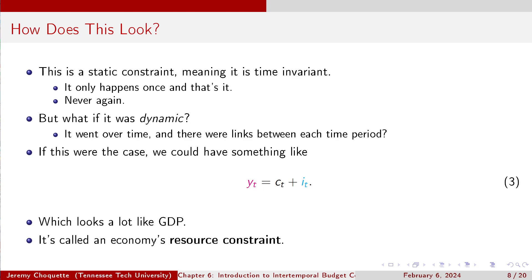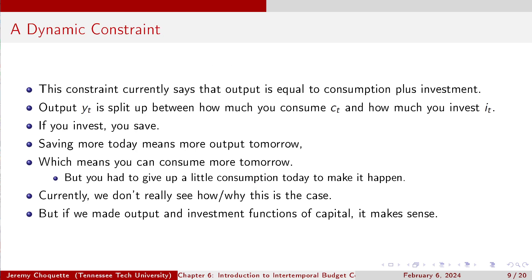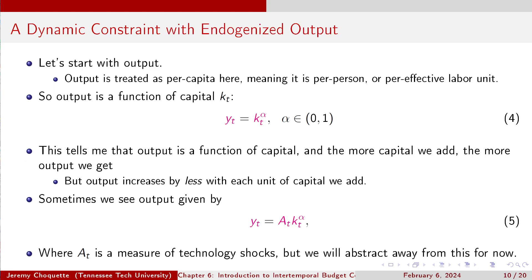If we have a dynamic constraint, we might write something like Yₜ = Cₜ + Iₜ — output Y or income Y equals consumption C plus investment I. This looks a lot like GDP, and it's actually an economy's resource constraint. Output is split between how much you consume and how much you invest. If you invest, you save. Saving more today means more output tomorrow, which means you can consume more tomorrow — but you've got to give up a little consumption today to make that happen.